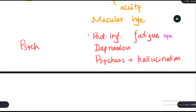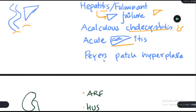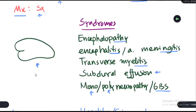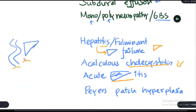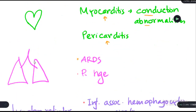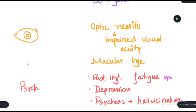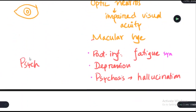Sometimes patients present with psychiatric manifestations such as post-infectious fatigue syndrome, depression, and even psychosis, which may be associated with hallucinations. Those are the expanded dengue syndromes, involving the nervous system, gastrointestinal and hepatobiliary system, renal system, cardiovascular system, lymphoreticular system, respiratory system, eye, and psychiatric manifestations. The treatment is symptomatic.